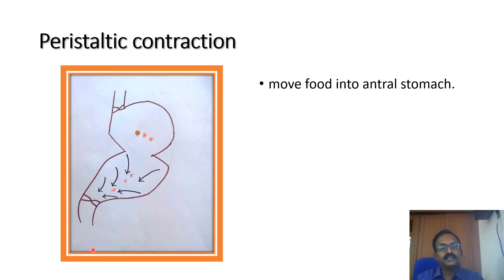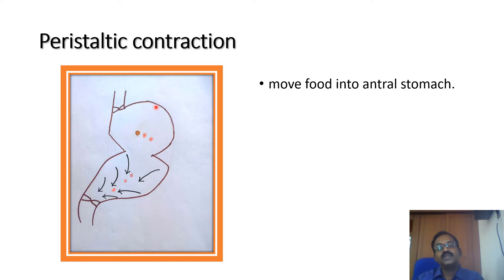Peristaltic contractions mainly occur in the middle of the stomach, helping to move the food into the antral part of the stomach. This is the pyloric sphincter; this is the fundus and body of the stomach. The fundus and body of the stomach have weak musculature compared to the antrum and pylorus. So the peristaltic ring-like contraction moves towards the antrum area.